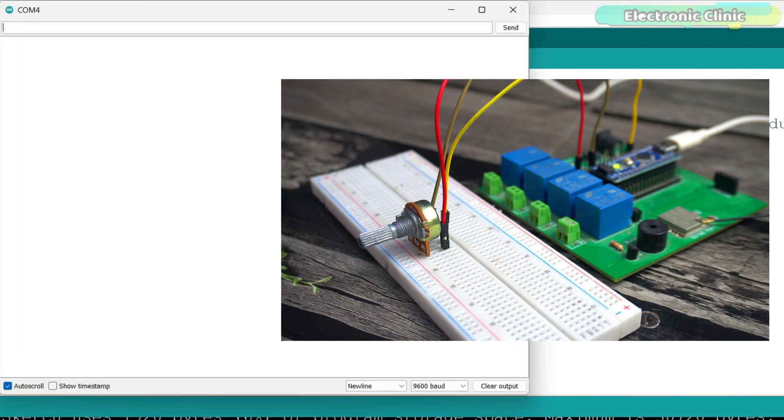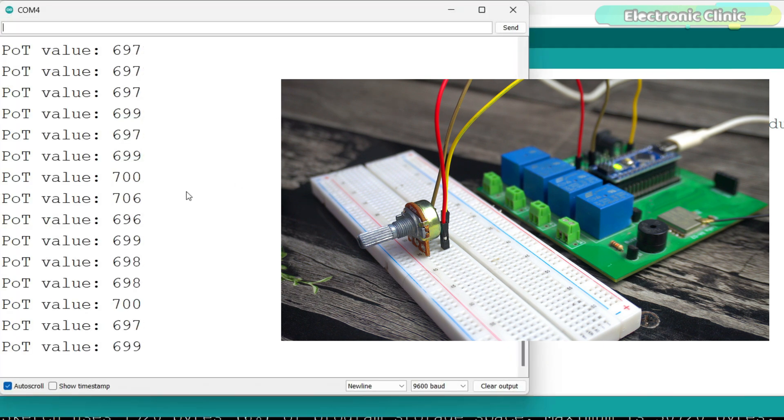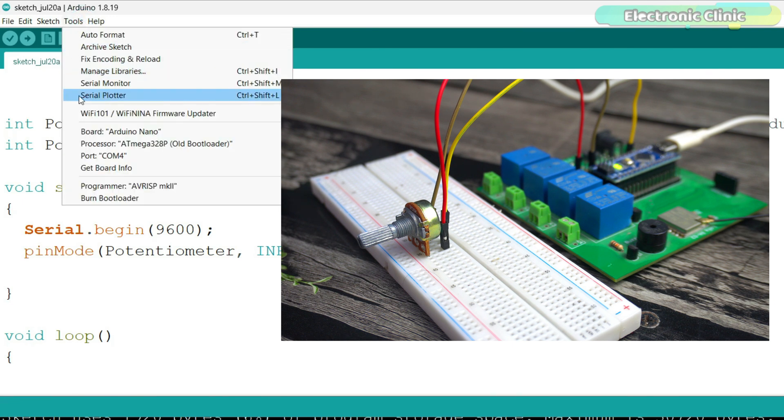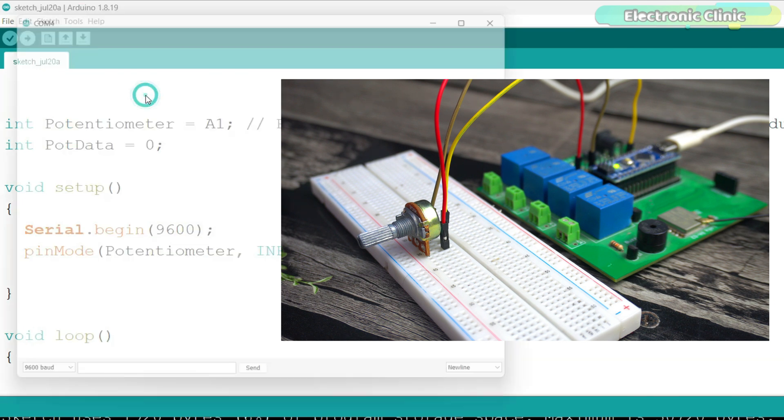Let's open the serial monitor. As you can see, the value is fluctuating a lot. This means the readings from the potentiometer are not stable. To understand this better, let's open the serial plotter. The serial plotter will give us a visual graph making it easier to see how much the value is changing over time.